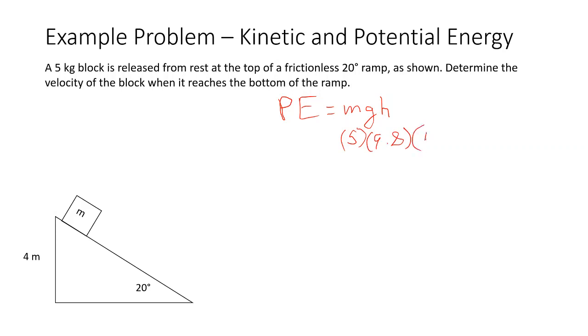So that's what we're going to use for our H value. We're 4 meters above our final height when we reach the bottom of the ramp. So if we calculate this out, do 5 times 9.8 times 4, we start with 196 joules of potential energy.